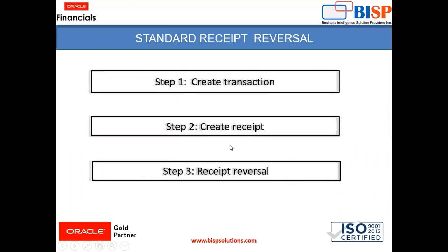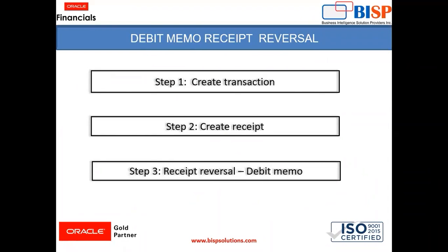In standard receipt reversal, we create a transaction, book a receipt against that transaction, and then reverse that receipt. In debit memo receipt reversal, we create a transaction, book a receipt, but do not reverse the receipt — instead we create a debit memo of an amount equal to the receipt amount. We will go to the instance and create both types.